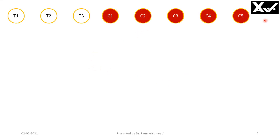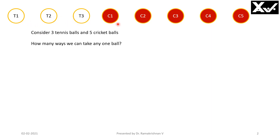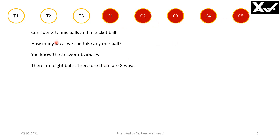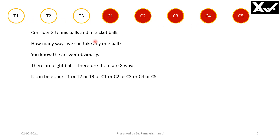Consider three tennis balls and five cricket balls. White balls are tennis balls — T1, T2, T3 — and five cricket balls, the red ones: C1, C2, C3, C4, and C5. How many ways can we take any one ball from the eight balls? Obviously eight ways. So T1 or T2 or T3 or C1 or C2 or C3 or C4 or C5 can be taken — that's eight ors, each represented by a plus sign, giving eight ways.